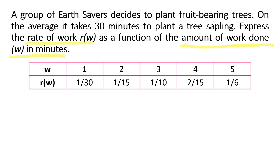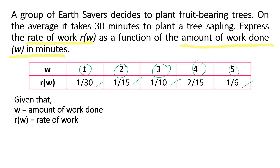If only one tree sapling is planted, the rate is 1/30. But if two are planted, that would mean one sapling is planted every 15 minutes on average. If three are planted, one sapling is planted every 10 minutes. If four are planted, two saplings are planted every 15 minutes. And if five are planted, one sapling is planted every 6 minutes. So given these premises, the relationship between the rate of work and amount of work done is r(w) = w / 30, where r(w) is the rate and w is the amount of work done.